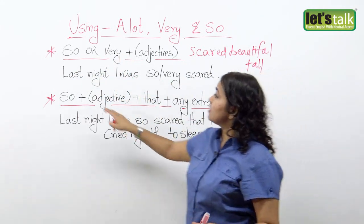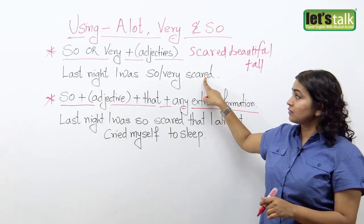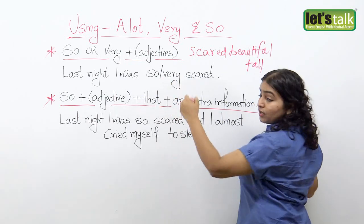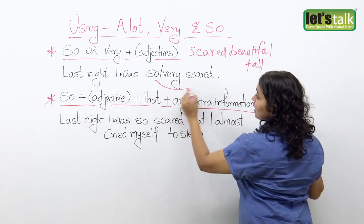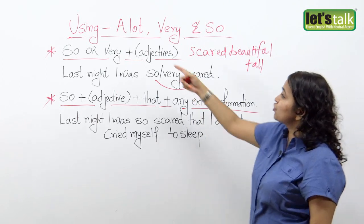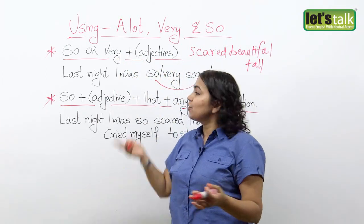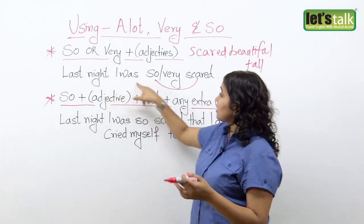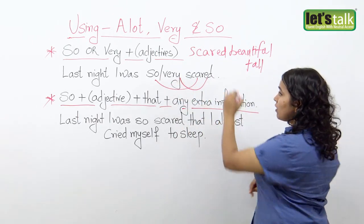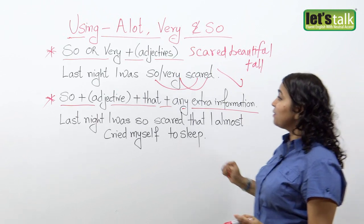For example, I could say: 'Last night I was so scared.' Here, 'so' comes before the adjective 'scared.' Because you can use 'so' and 'very' interchangeably, you could also say: 'Last night I was very scared.' Both are absolutely correct.